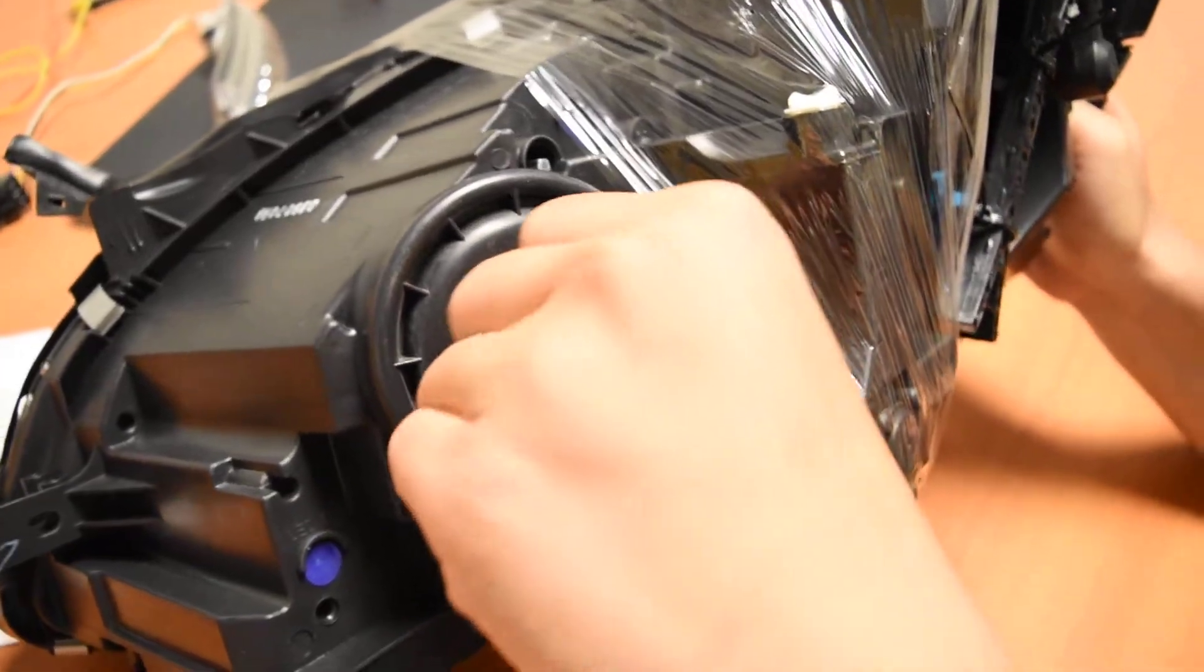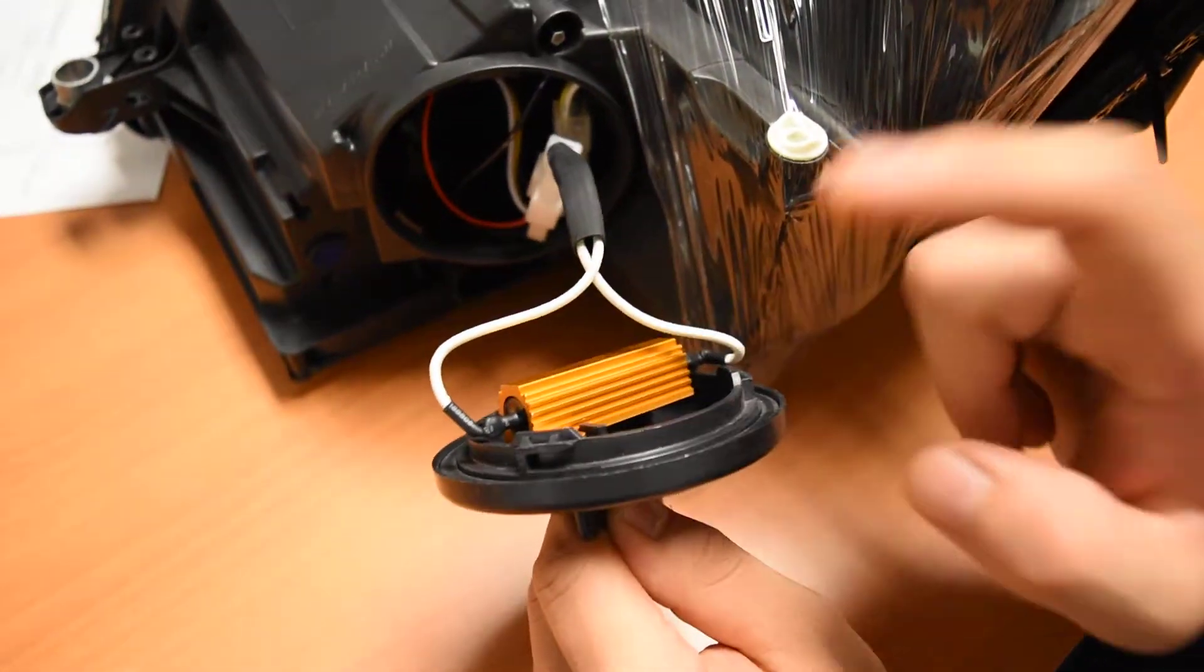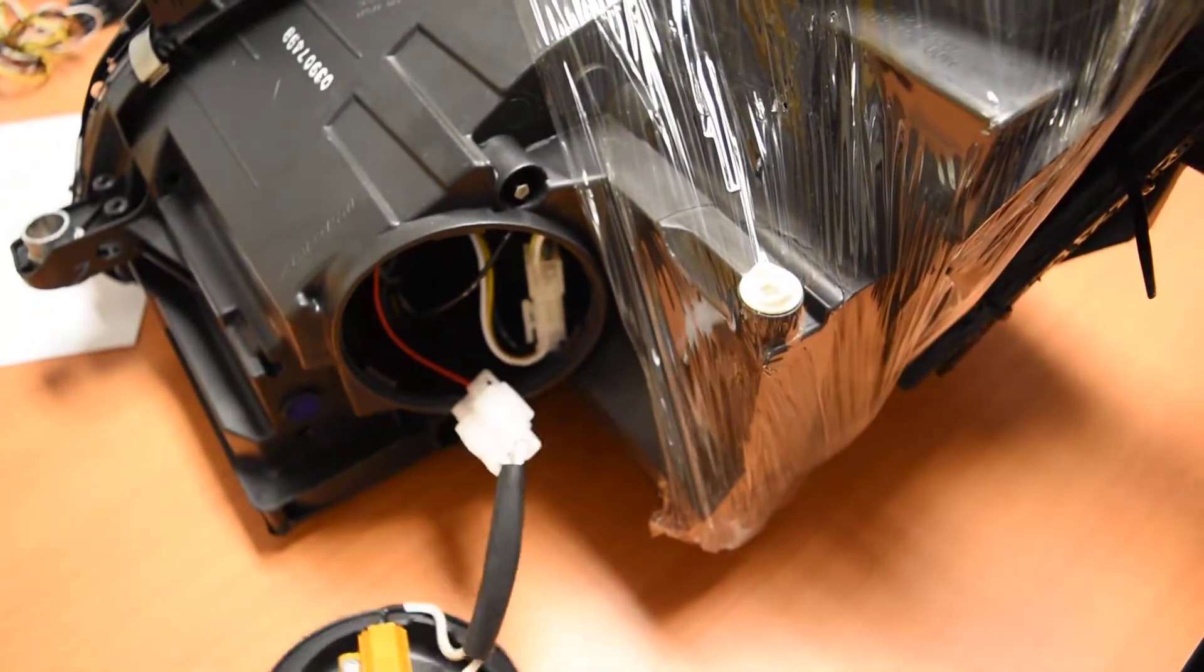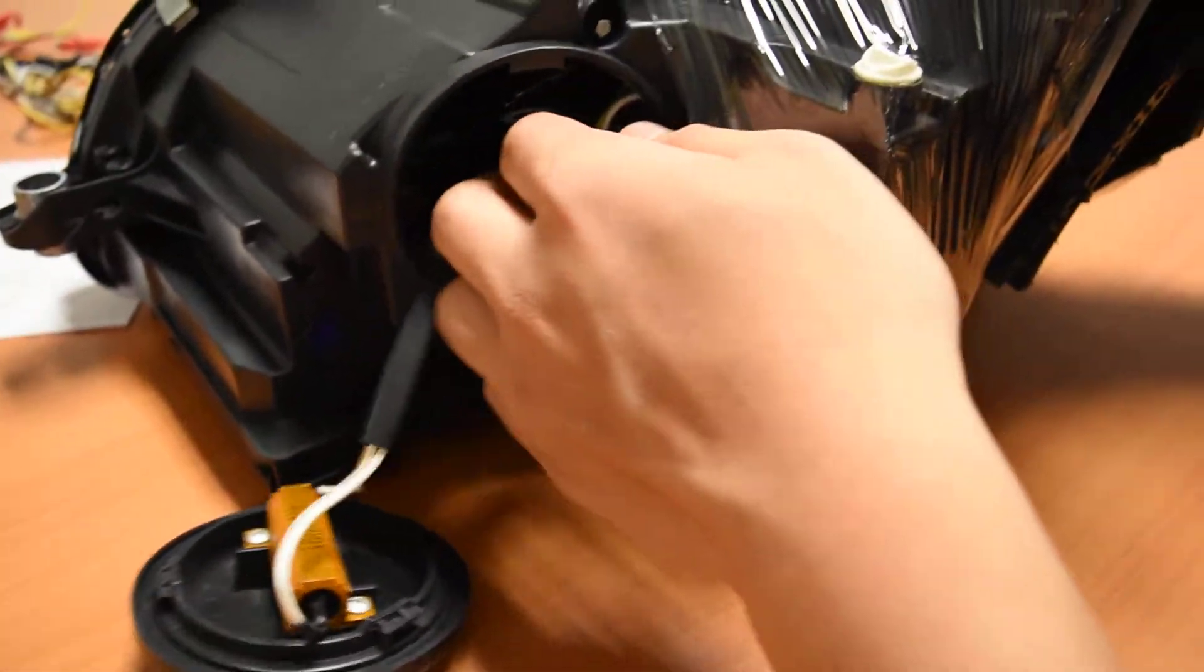I'm going to twist the high beam rear housing cap to remove it. You'll see a copper resistor, don't mind that. What I'm going to be pulling out is actually a black little box.